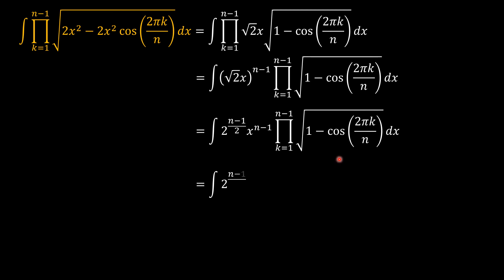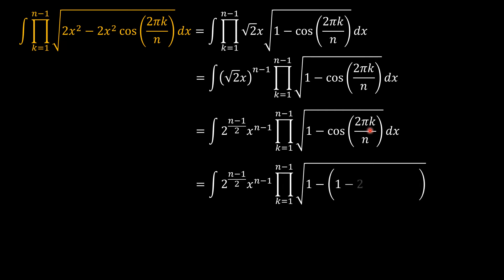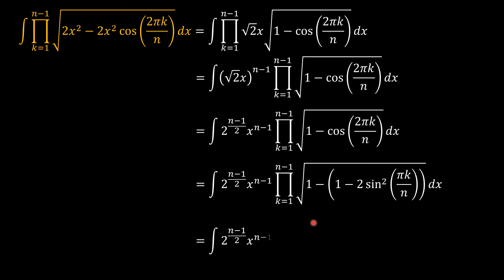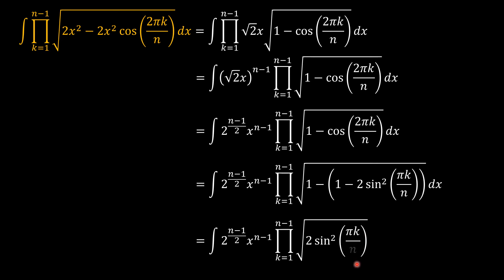Let's go back and focus on what we have under the square root sign. Cosine(2πk/n) is the same as 1 minus 2 sine squared(πk/n) using the double angle formula. The two 1s cancel, so what we now have under the square root sign is 2 sine squared(πk/n).